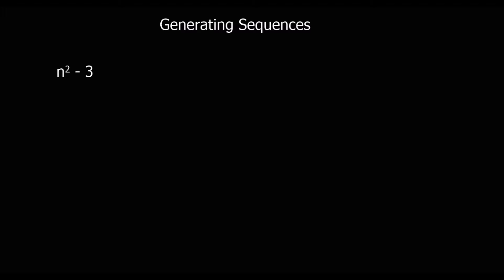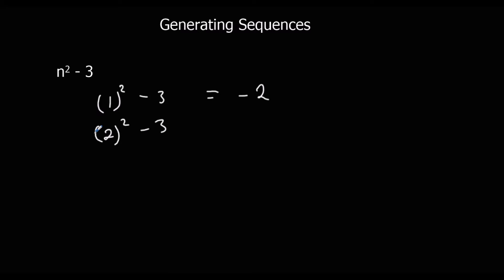This one's n squared minus 3. The same thing applies — the first term is when we substitute in 1 for n, so 1 squared minus 3: 1 minus 3 is minus 2. 2 squared minus 3: 2 squared is 4, minus 3 is 1. 3 squared minus 3: 3 squared is 9, minus 3 is 6.